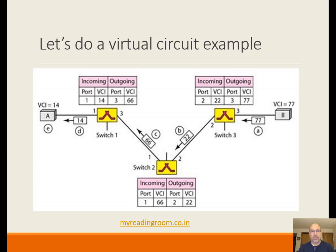Then 66 goes up to switch 1, incoming on port 3, and the outgoing VCI is 14. We could map it back the other way too, but that's not always the case. So that's an example of a virtual circuit — it's the combination of incoming and outgoing ports and incoming and outgoing VCIs.